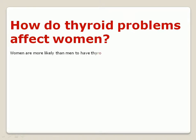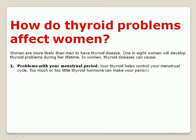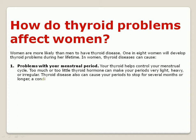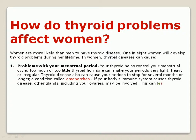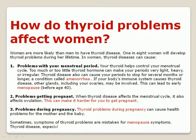How do thyroid problems affect women? Women are more likely than men to have thyroid disease — one in eight women will develop thyroid problems during her lifetime. In women, thyroid diseases can cause problems with the menstrual period. The thyroid helps control the menstrual cycle; too much or too little thyroid hormone can make periods very light, heavy, or irregular. Thyroid disease can also cause periods to stop for several months or longer, a condition called amenorrhea.